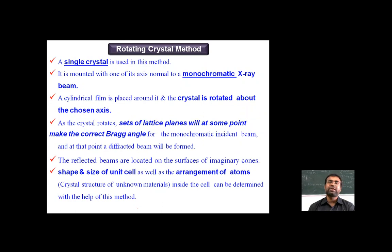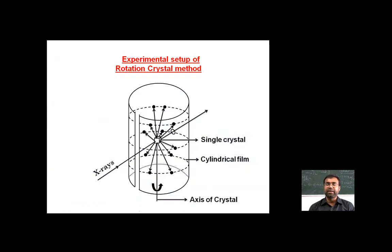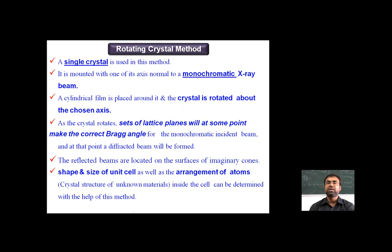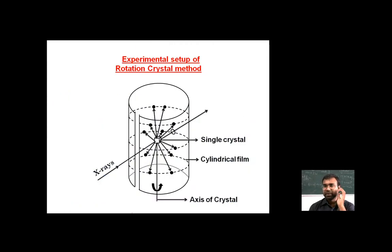The rotating crystal method uses a single crystal mounted with one of its axes normal to a monochromatic X-ray beam. A cylindrical film is placed around it and the crystal is rotated about the chosen axis. As the crystal rotates, sets of lattice planes will at some point make the correct angle for Bragg diffraction, and a diffracted beam is formed. The reflected beams are located on the surface of imaginary cones. The shape and size of the unit cell and the crystal structure of unknown materials can be determined with this method.